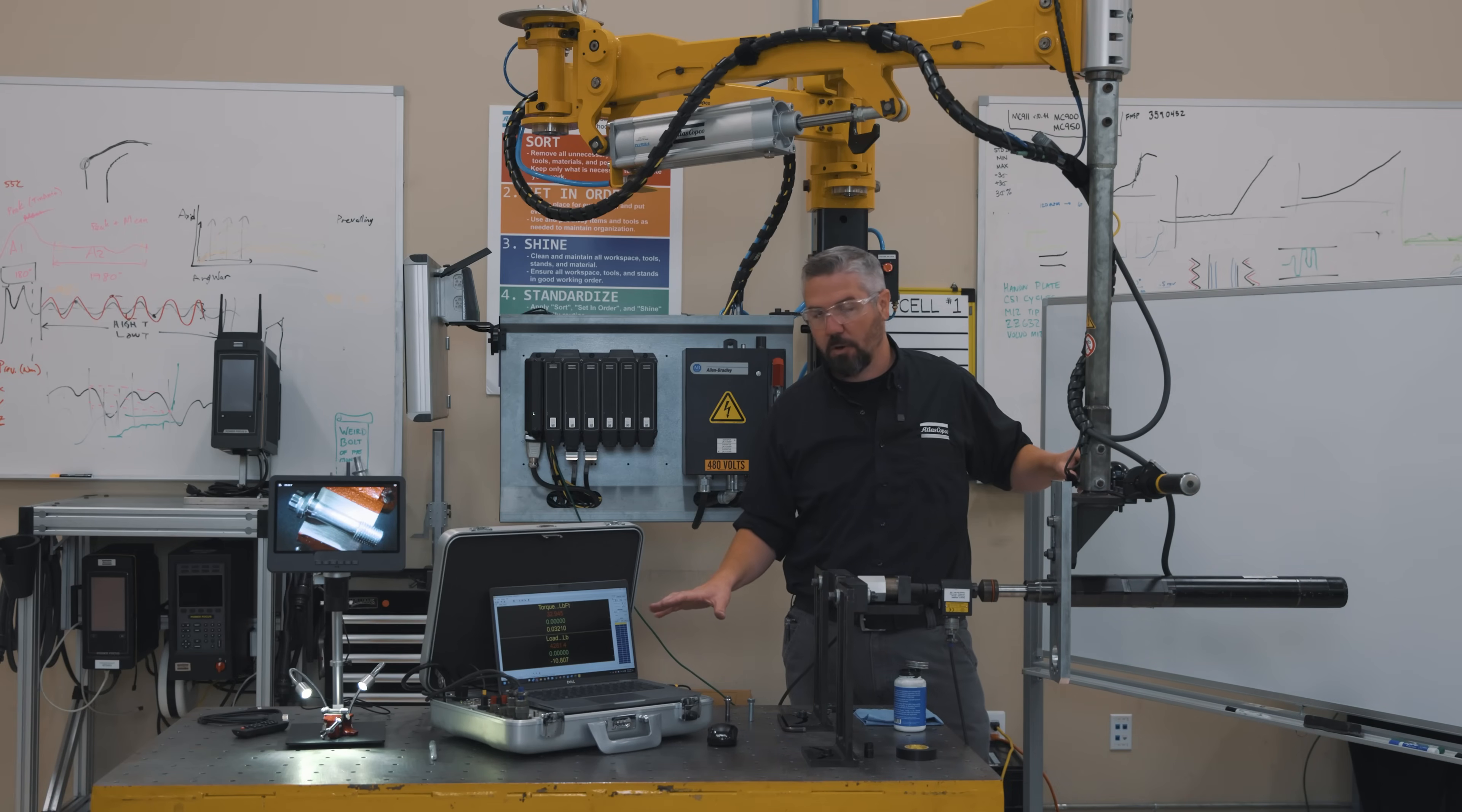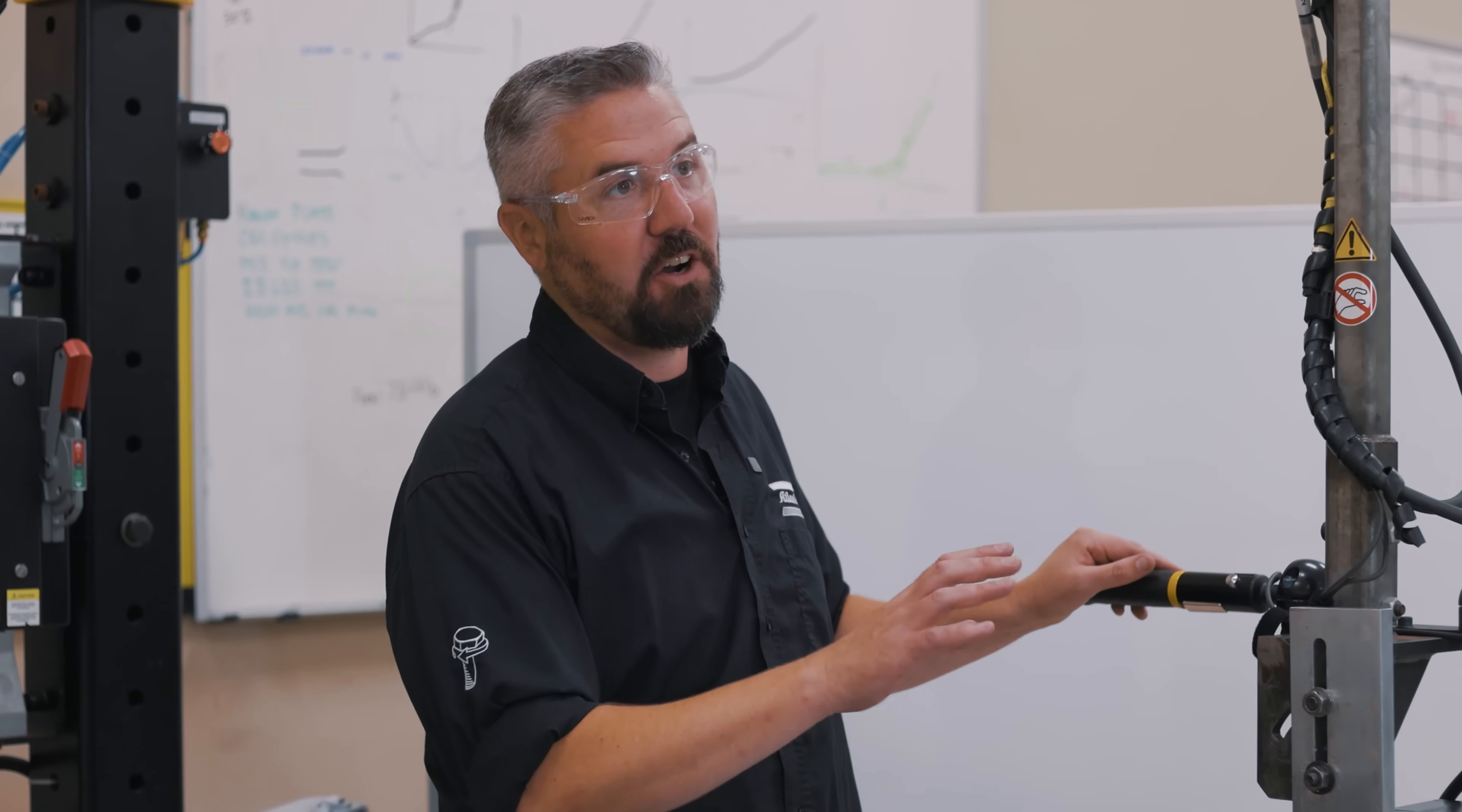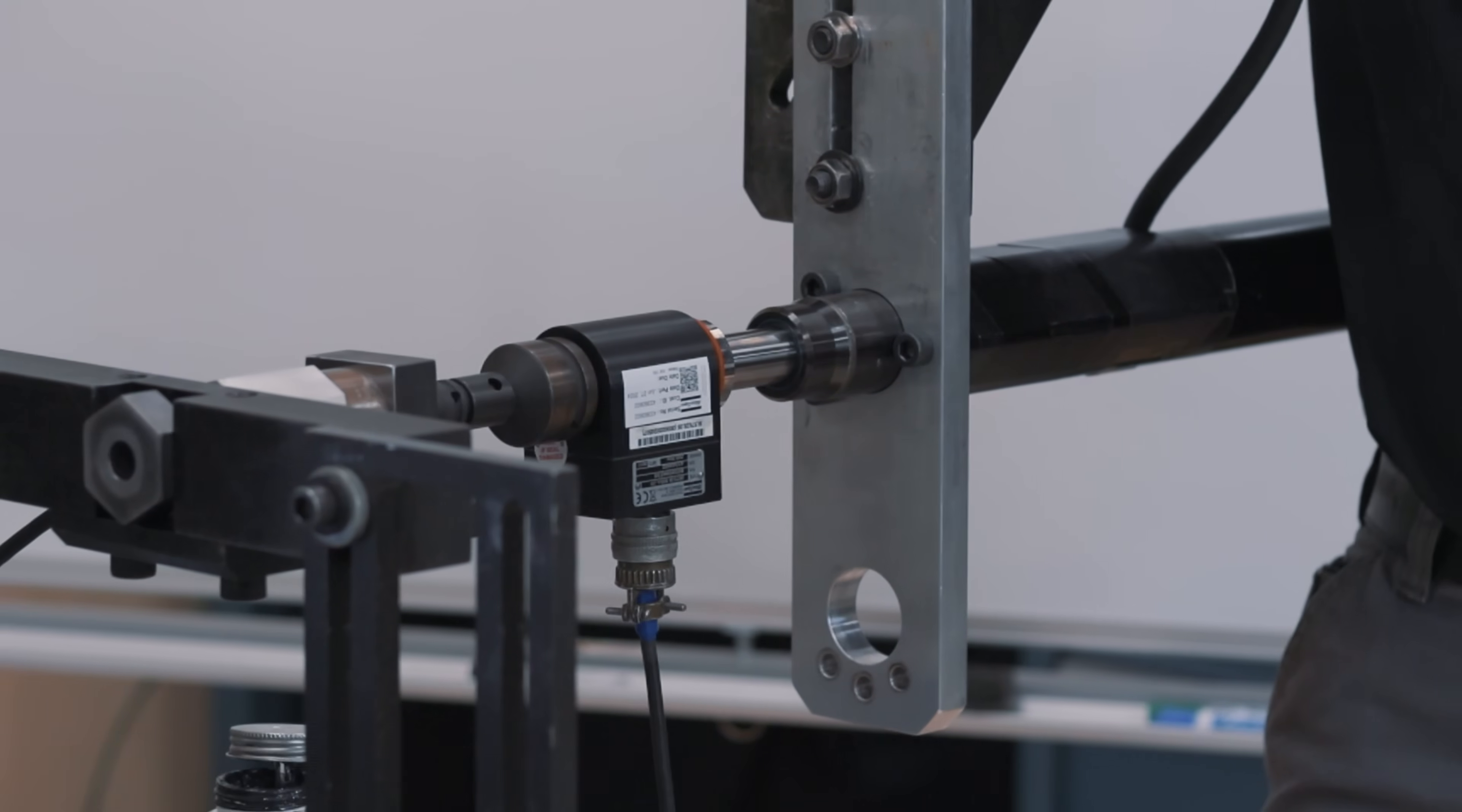We got our 33 foot pounds of torque, but we generated over 4,000 pounds of clamping force. Now let's take this thing all the way up and put enough torque on it to break this bolt and see what kind of torque it takes and what kind of clamping force is generated.